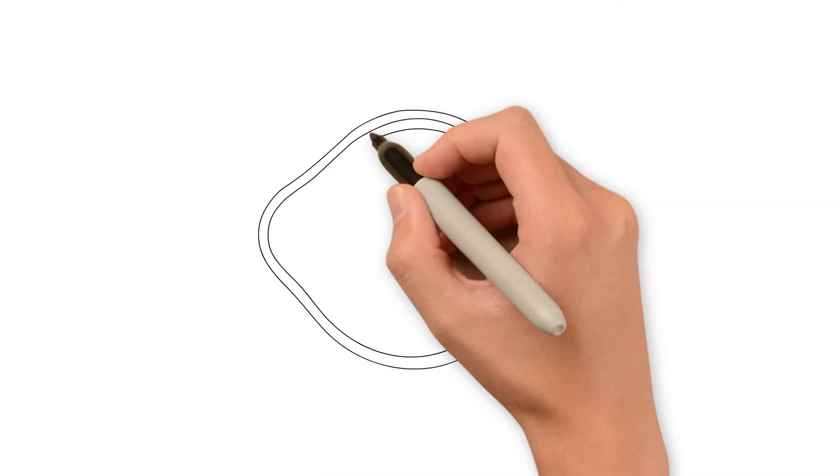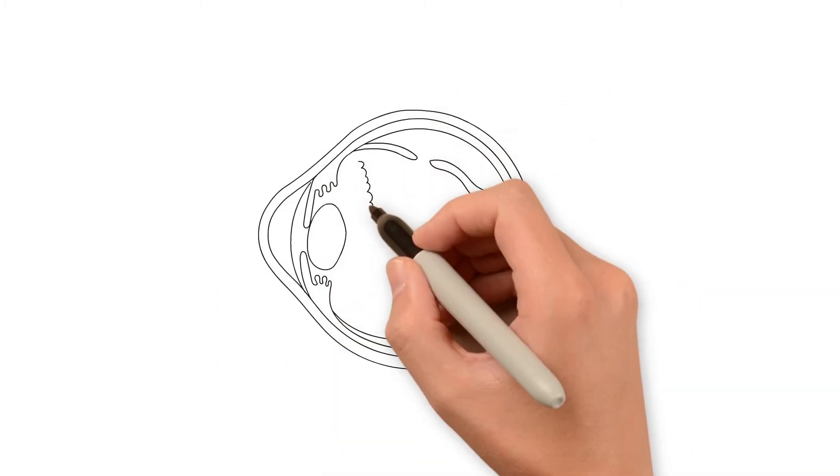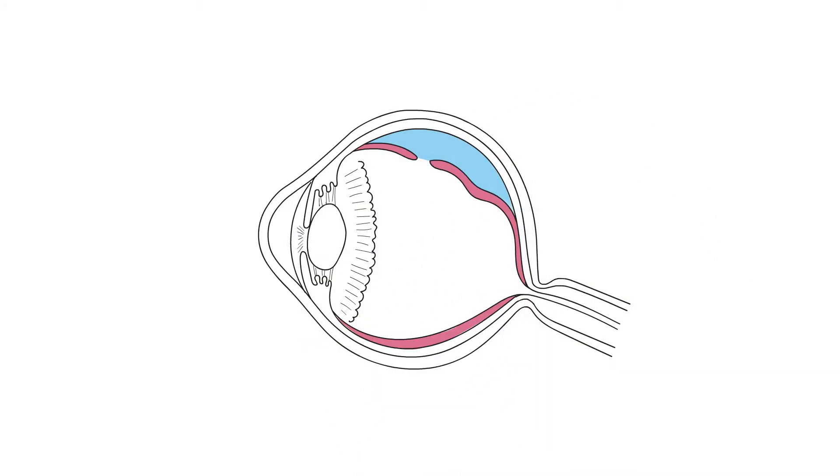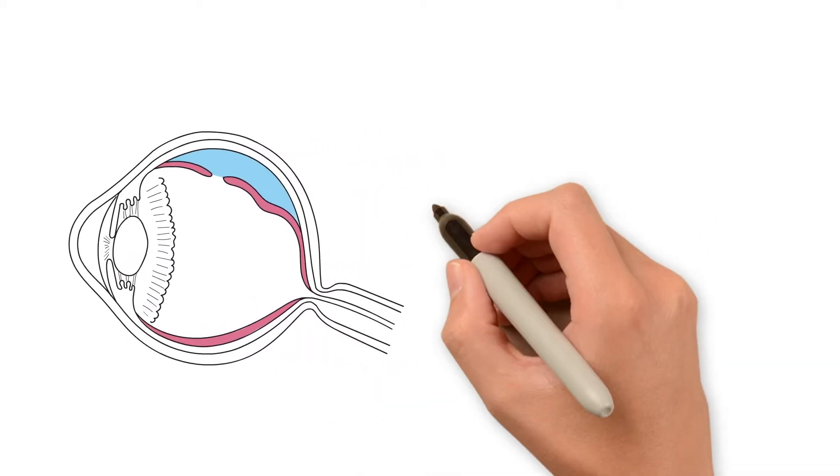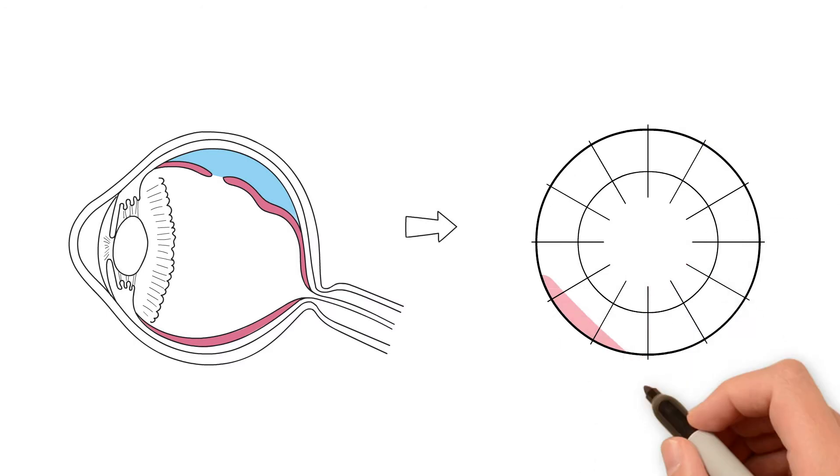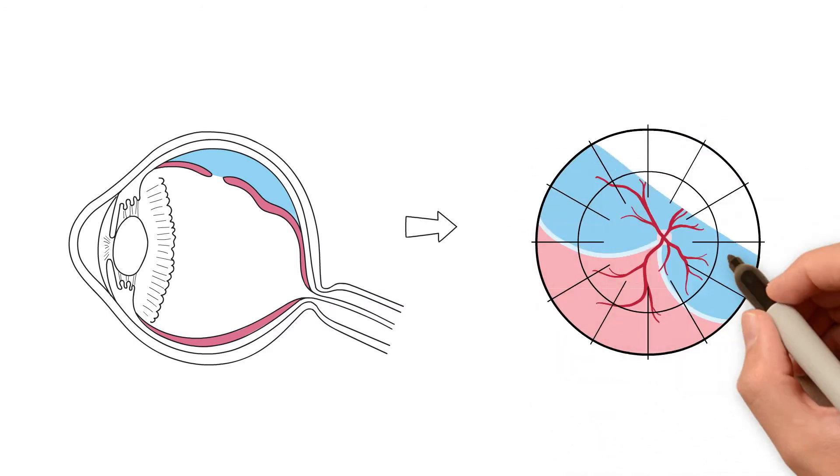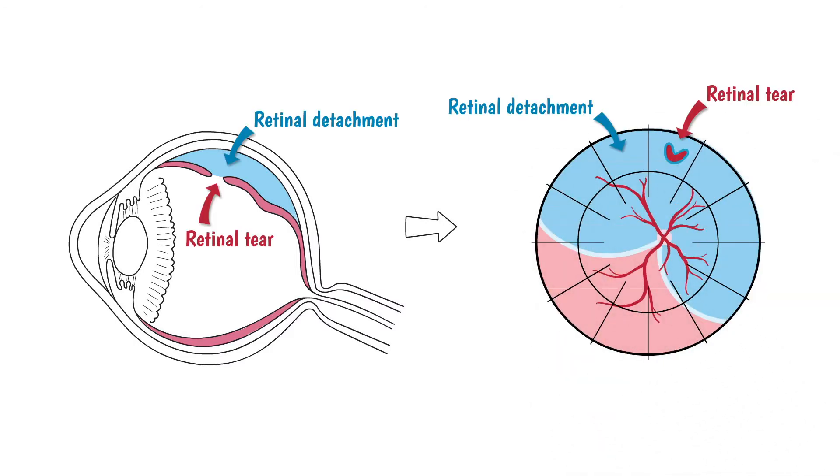When there is a tear in the retina, fluid from inside the eye is able to seep through the retinal tear, thereby lifting the retina away from the retinal pigment epithelium. This fluid that accumulates behind the retina prevents the retina from reattaching.